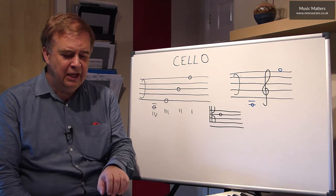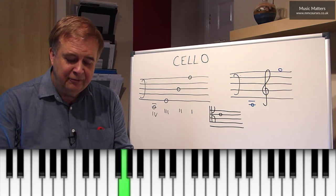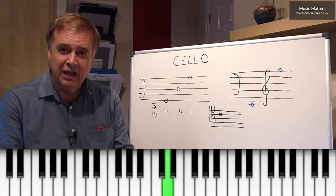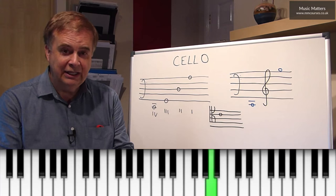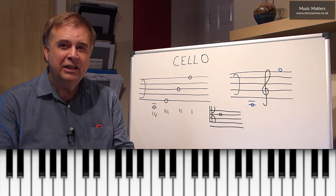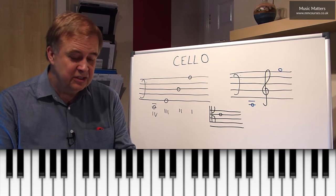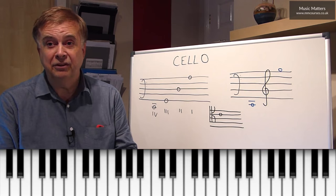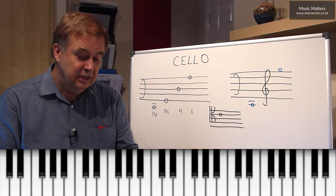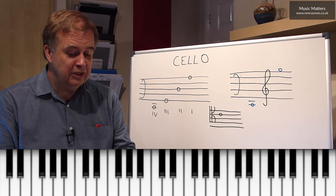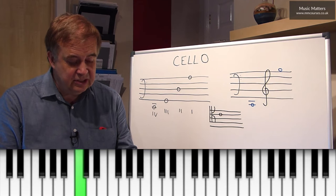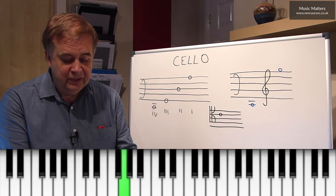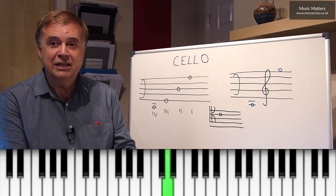Now you remember the violin goes G bottom string, upper fifth to D, upper fifth to A, upper fifth to E. And we said that the viola has the same business of strings being a fifth apart. And in fact, the viola is pitched a fifth lower than the violin, so the viola strings are C, G, D, and A.